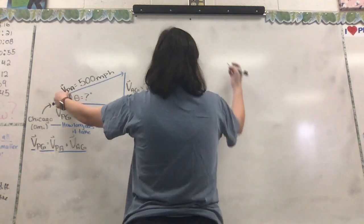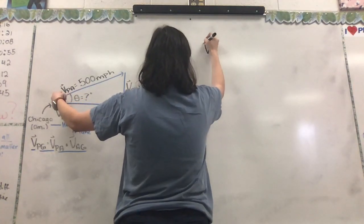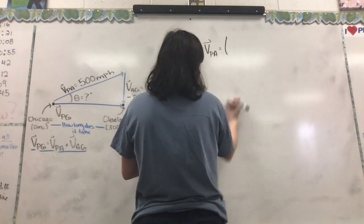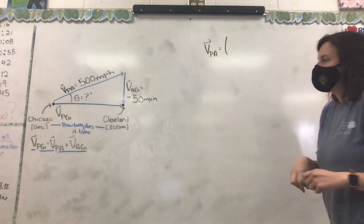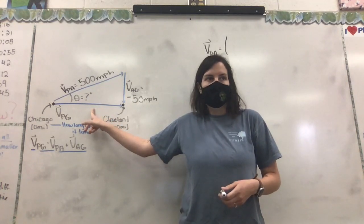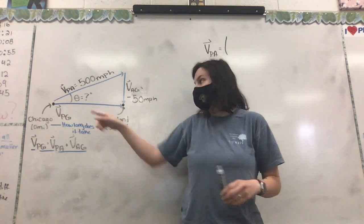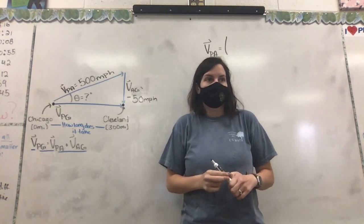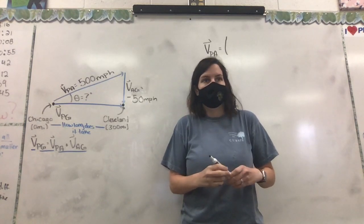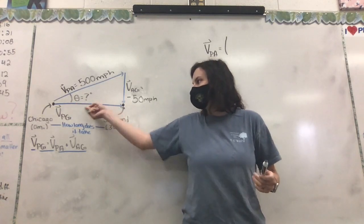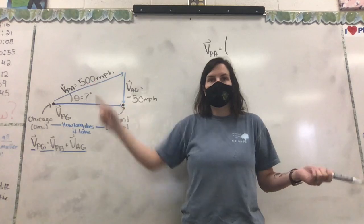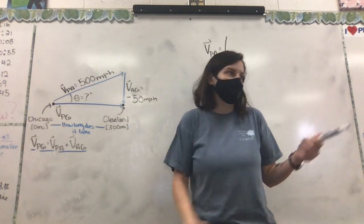So how I'm going to do that is I'm going to say that the velocity of the plane in reference to the air is equal to its X value and its Y value. So if we're wanting its X value with respect to theta, are we going to use sine, cosine, or tangent? Is this adjacent or opposite to the angle? Adjacent. And we were given the hypotenuse, right? So what are we going to use? Cosine.